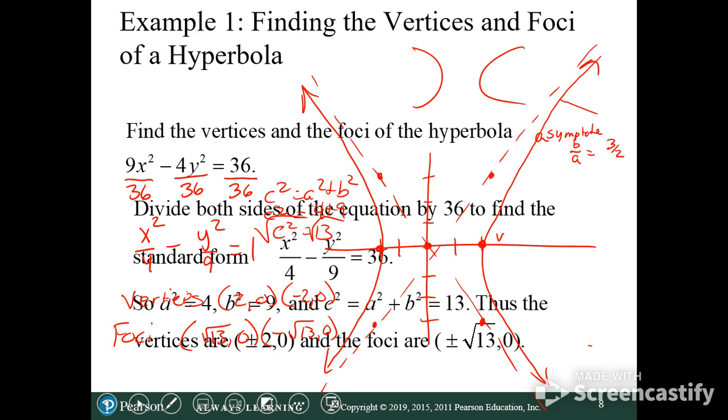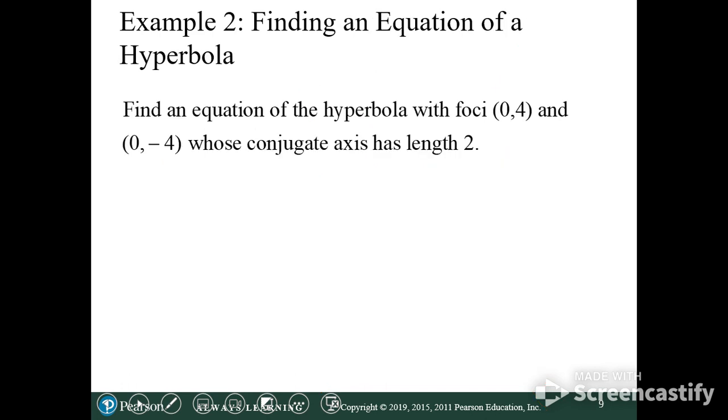Hey look at that, Mr. Bierschbach was right for once. All right, so if the foci are at zero four and zero negative four, where's our center going to be? Zero zero, because it's going to be halfway in between those two. The conjugate axis has the length of two.